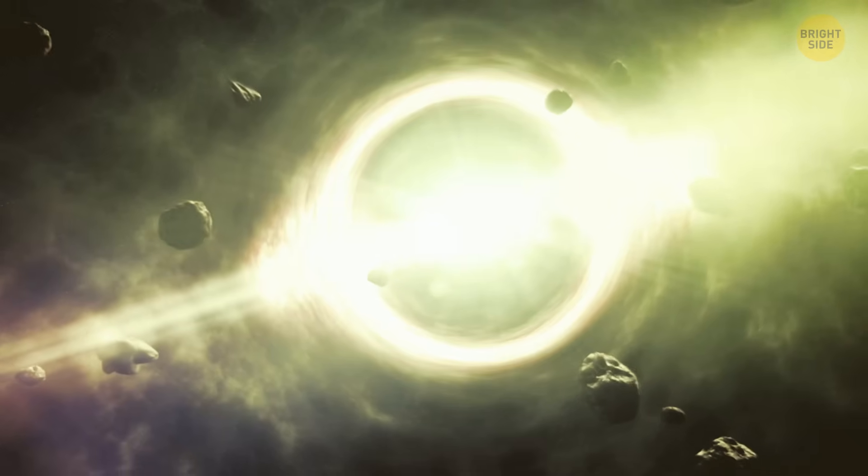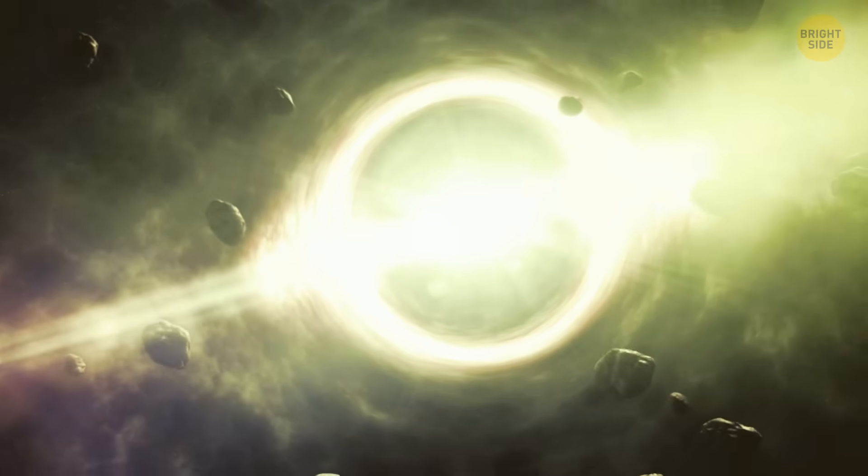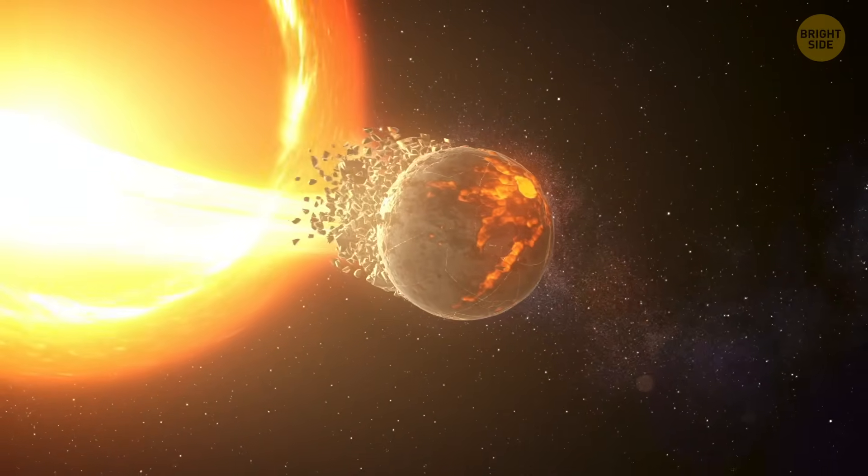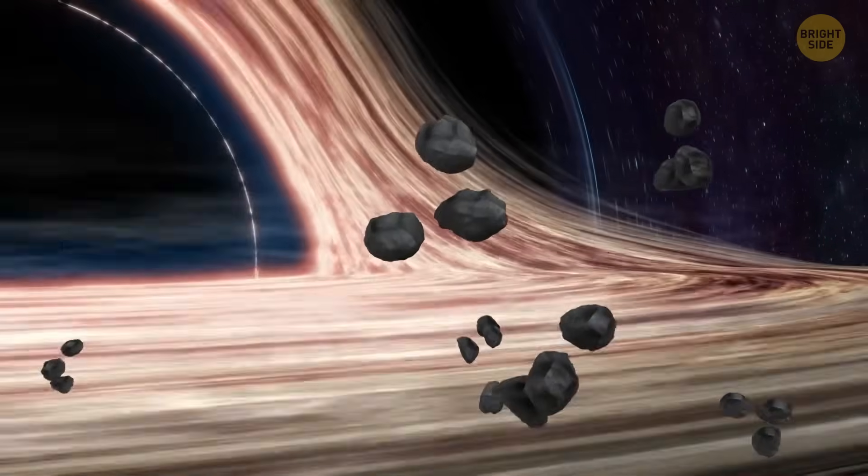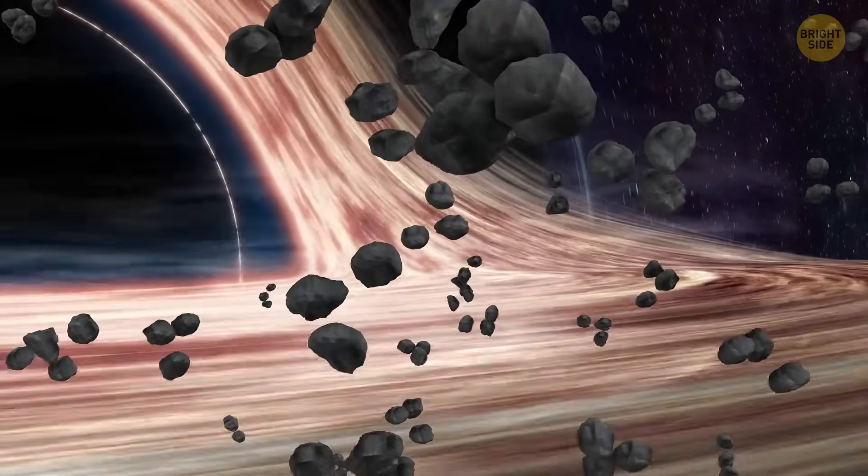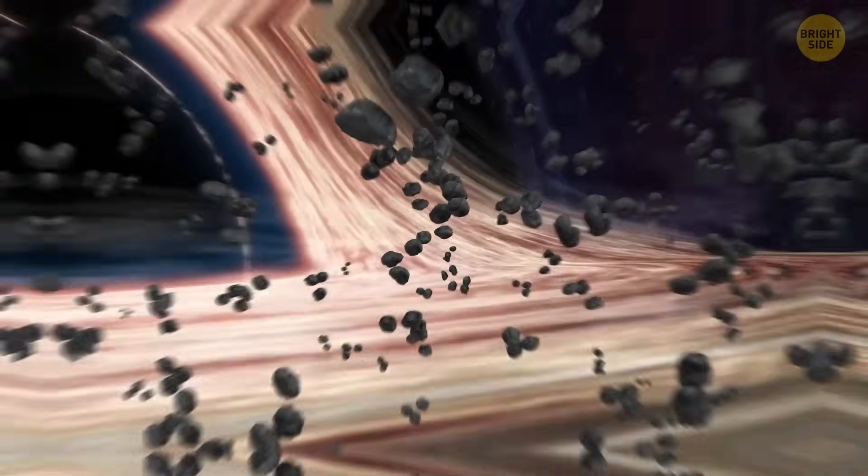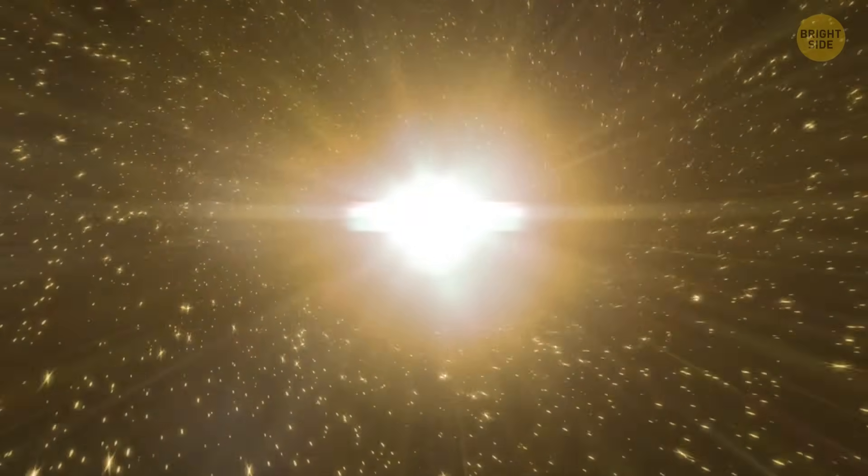An asteroid drifts too close and the black hole seizes it. Gas twists and whirls and gravity starts pulling harder and faster. The accretion disk blazes and spins like a cosmic whirlpool. Radiation bursts out in violent flashes.